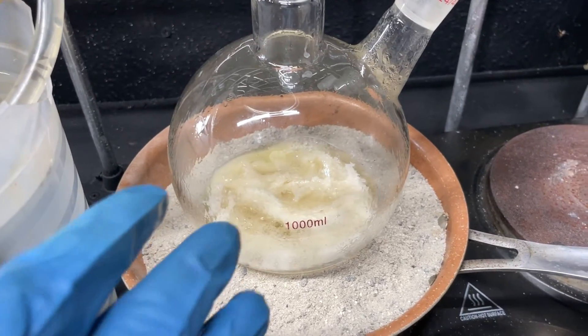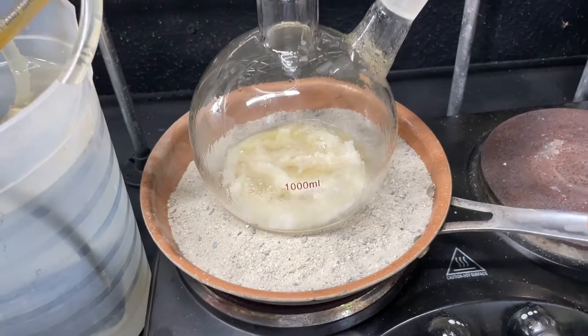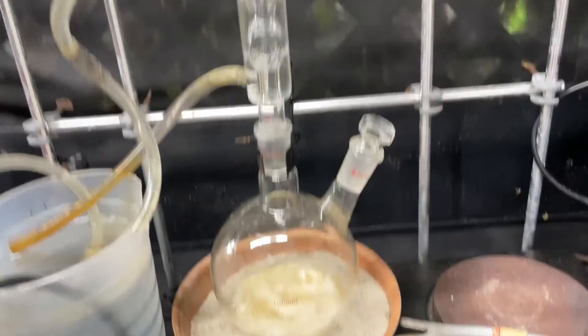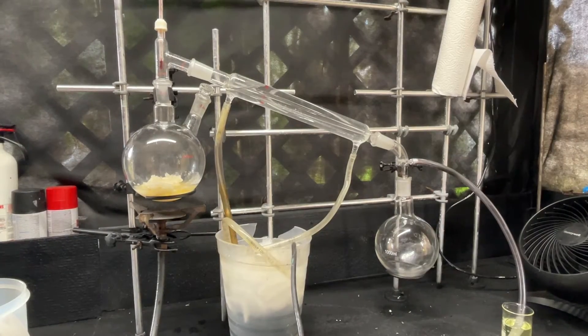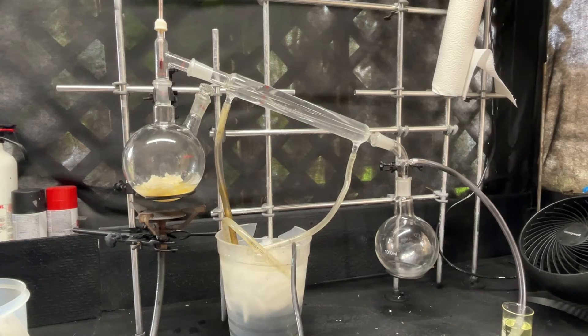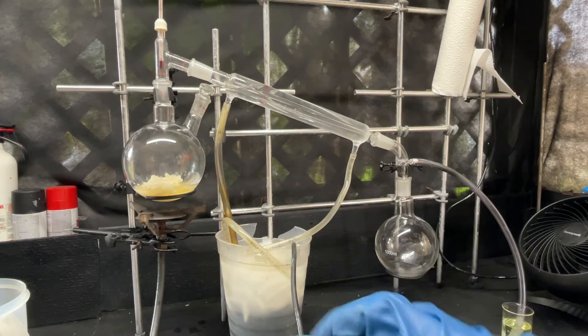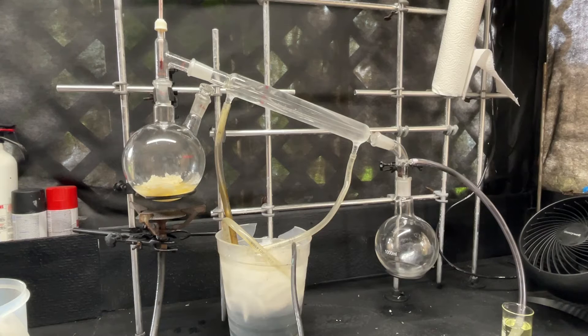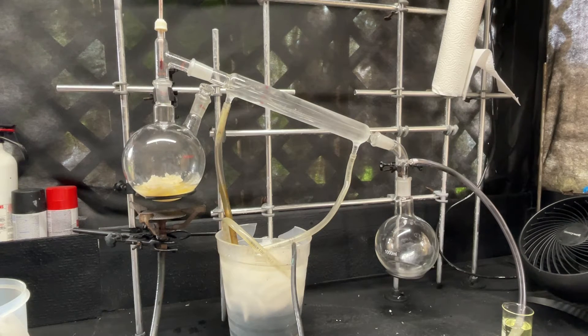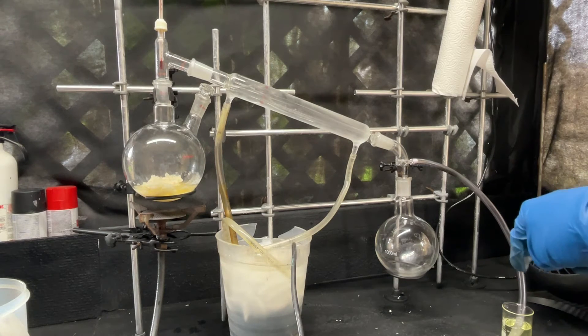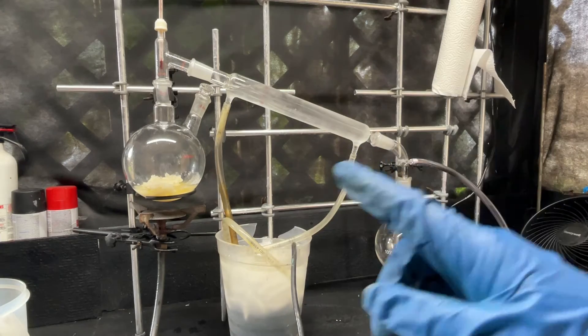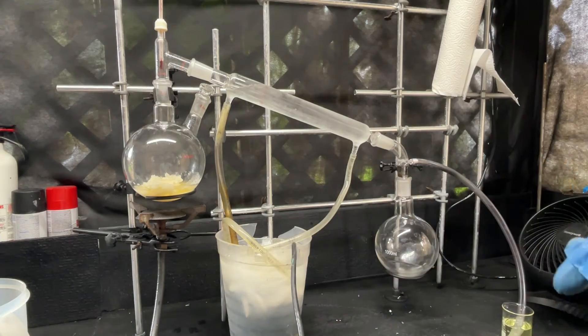Now that this has been refluxing for a couple hours, it's time to set this up for simple distillation. We're going to distill our hydrazine mixture. Down here on the vacuum inlet, I have a solution of bleach to neutralize any excess hydrazine. I'm going to distill this and come back when that's done.